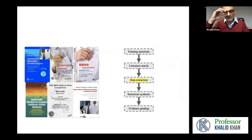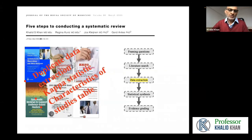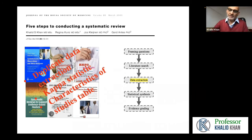We now move on to data extraction, because without data extraction we cannot move on to perform a meta-analysis. When we extract data from a published paper, it's important that at least two people do it independently — because if one makes a mistake, the other can pick it up and the error can be corrected. This coherence between two data extractors can be measured. One of the statistics used for this complementarity between data extractors is called the Kappa statistic.